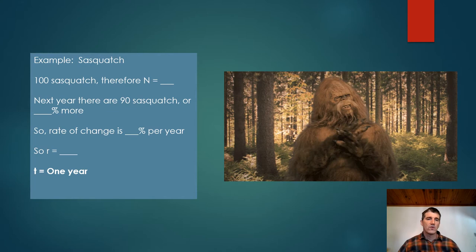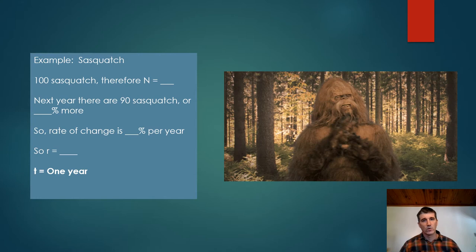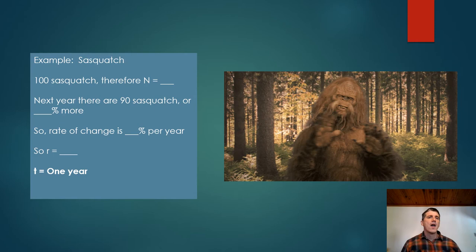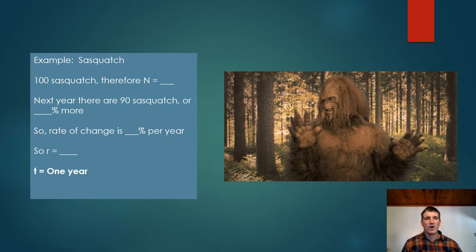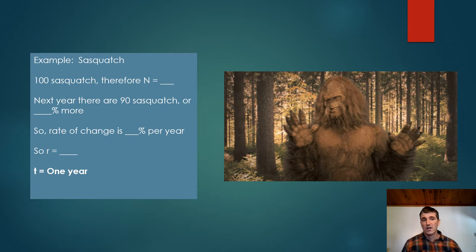The rate of change can go two different directions. It could increase, it can also decrease. So here's an example with a decreasing population that the Sasquatch obviously isn't as happy about. So if we had 100 Sasquatches and they composed our population, our N would be 100.